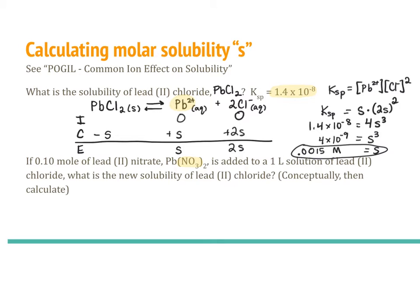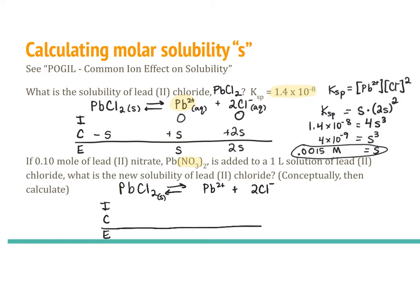Now I can calculate that as well. The lead chloride equilibrium is the same as before: PbCl₂ is in equilibrium with Pb²⁺ and Cl⁻. But this time there is already a significant amount of lead from the lead nitrate. It is a 1-liter solution, so the concentration of lead from lead nitrate is 0.1 molar. We have no chloride initially. Applying the ICE table with changes of +S and +2S, the equilibrium concentrations are 0.1 + S for lead and 2S for chloride.